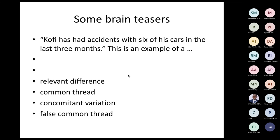Now let's do some exercises on the three informal causal reasoning patterns. Kofi has had accidents with six of his cars in the last three months. Is this relevant difference, common thread, concomitant variation, or false common thread? Kofi — one person — is a common thread running throughout all six accidents. The obvious answer is common thread.